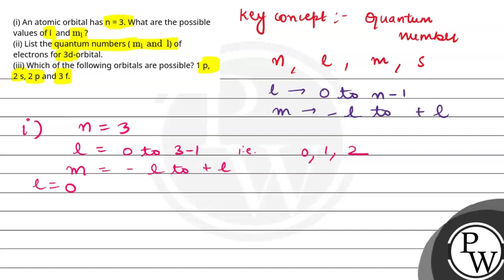So let us say, when l value is 0, possible value of m is 0. When l value is 1, possible values of m are minus 1, 0, and plus 1. And when l is 2, possible values of m are minus 2, minus 1, 0, plus 1, and plus 2. So these are possible values corresponding to each l. These are the first option answer.